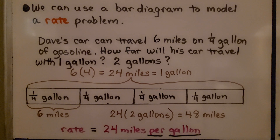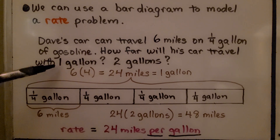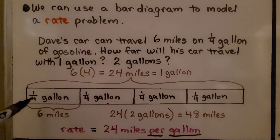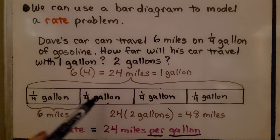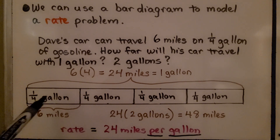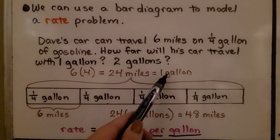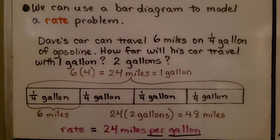We can use a bar diagram to model a rate problem. Dave's car can travel six miles on one-fourth gallon of gasoline. How far will his car travel with one gallon or two gallons? The bar diagram shows six miles for one-fourth gallon. One-fourth means one of four parts, so we make four of them. One whole gallon would be 24 miles — six times four parts. For two gallons, we do 24 miles per gallon times two, which is 48 miles. The rate is 24 miles per gallon.